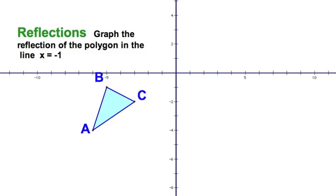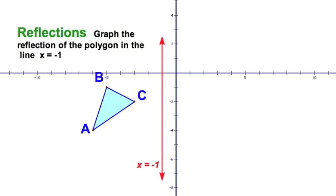This is problem number 6 in the exercises. We're going to take a triangle and reflect it over a line that's not the x-axis, y-axis, y equals x, or y equals negative x — we're going to reflect it over the line x equals negative 1. Those coordinate rules we learned won't be very helpful here. Let's just visualize this one. First, let's draw the line x equals negative 1, which we recall from algebra is a vertical line.